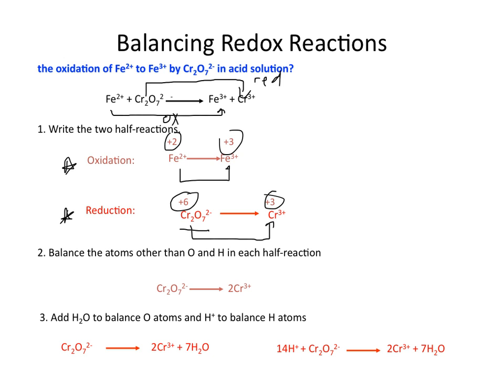Notice that I'm skipping over the addition of any electrons — that will be taken care of later in the balancing redox process. Step 2: balance the atoms that are not oxygen or hydrogen in each half reaction. In the oxidation half reaction, the number of iron ions are equal on both sides, so no balancing is needed. However, in the reduction step, we have two chromiums on the left and only one on the right, so we put a coefficient of 2 in front of the chromium +3 ion.